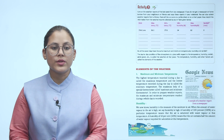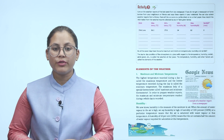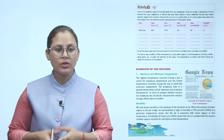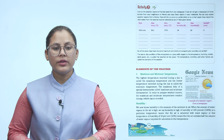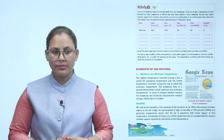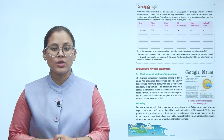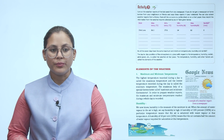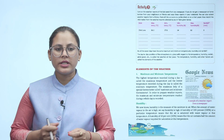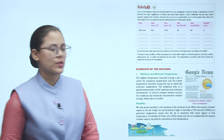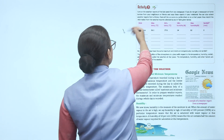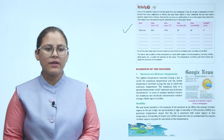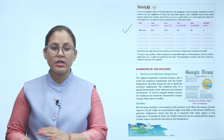Activity 1: Cut out the weather reports of the last week from any newspaper. If you do not get a newspaper at home, borrow from your neighbors or friends and copy these reports in your notebook. You can also collect weather reports from a library. Paste all the cutouts on a chart paper and record the information in the table. Check whether all 7 days have the same maximum and minimum temperatures, humidity and rainfall.